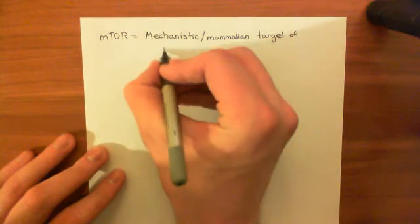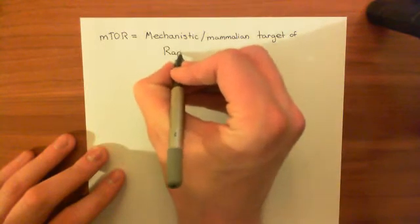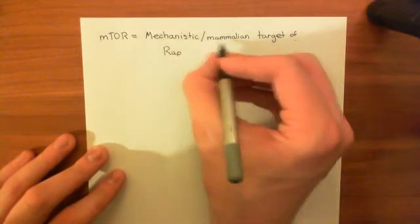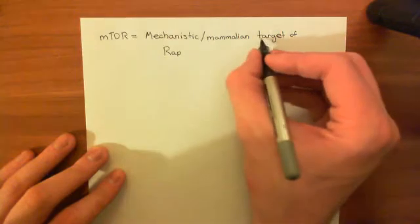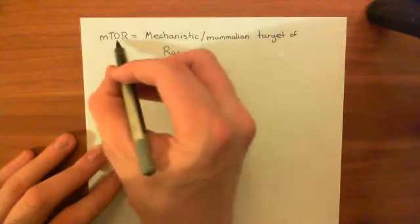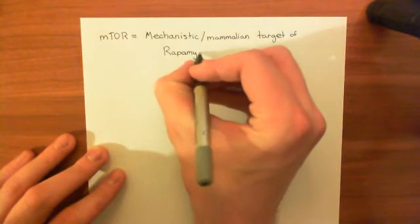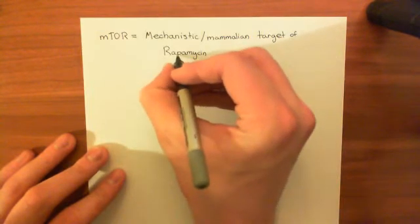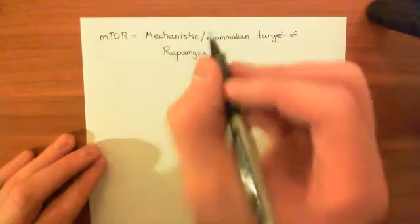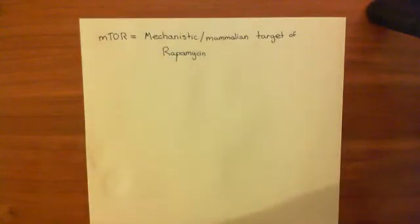But officially its name is the mechanistic target of rapamycin, but mammalian target of rapamycin, whatever you want to call it. So again they took the m from mammalian or mechanistic, t from target, o from of, and then rapamycin. Rapamycin is a drug that has been renamed since this protein was named. It's been now renamed sirolimus, and it's a powerful immunosuppressant.